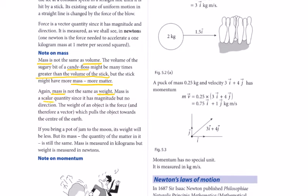Mass is a scalar quantity since it has magnitude but no direction. The weight of an object is the force, so it's a vector. Weight pulls the object towards the center of the earth. If you bring a pot of jam to the moon, its weight will be less, but the mass won't change. The quantity of matter in it will still be the same.